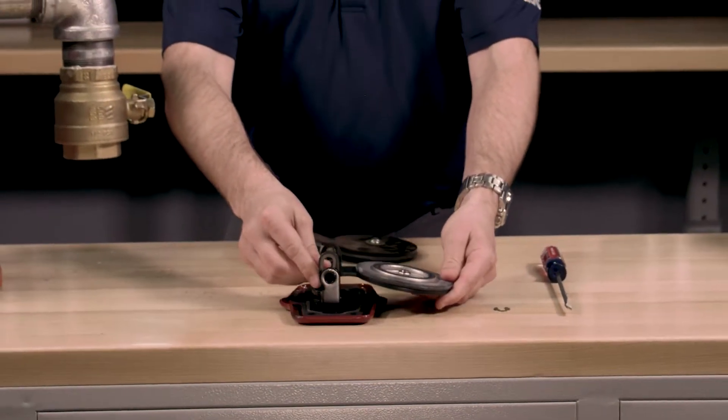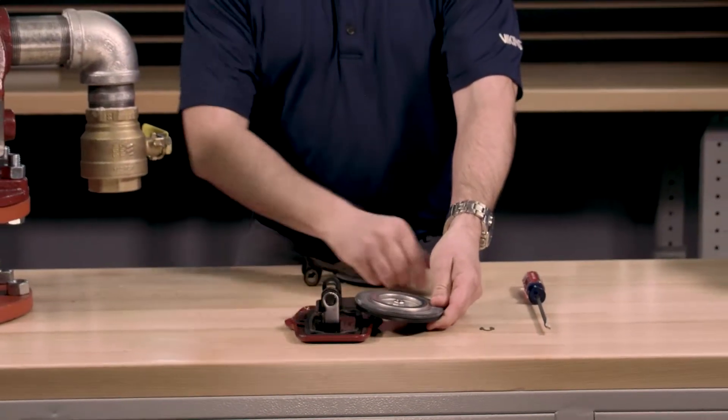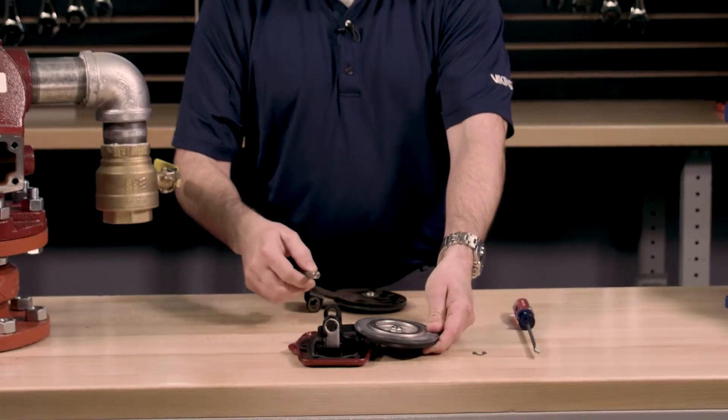The new clapper assembly can be installed by lining up the holes in the clapper assembly with the cover.